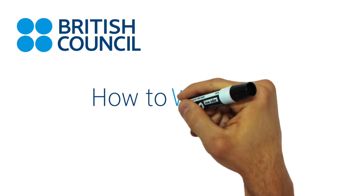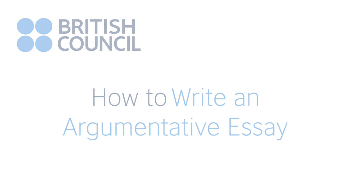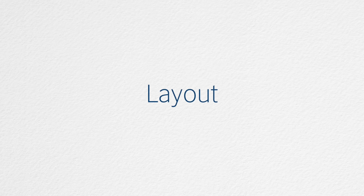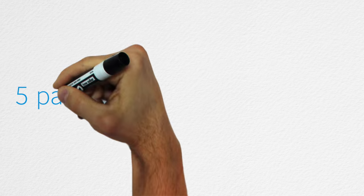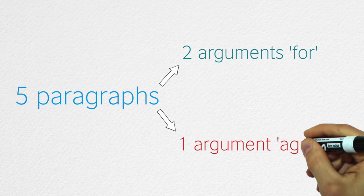We are going to learn the process of writing an argumentative essay in five short videos. We normally use a five paragraph structure common in other types of essay with two arguments supporting our view and one against.